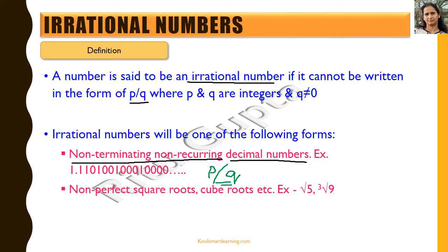Then we have non-perfect square roots and cube roots, of the type square root of 5, cube root of 9, and nth roots of numbers which do not result in a rational number. These are another form of irrational numbers. And then some mathematical constants like pi, e, etc. are also irrational numbers.